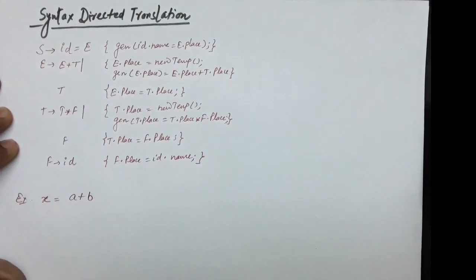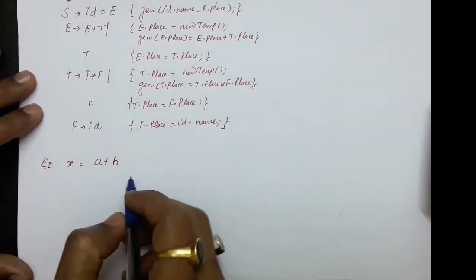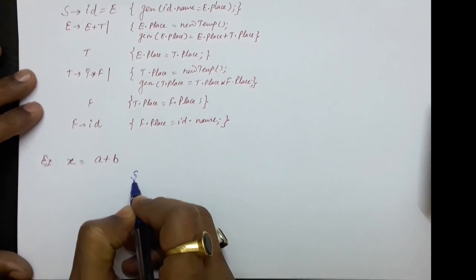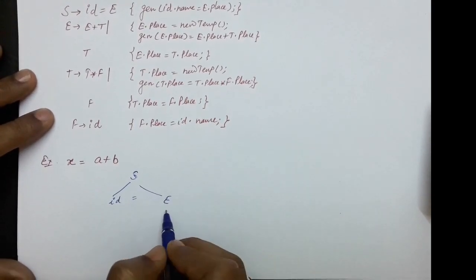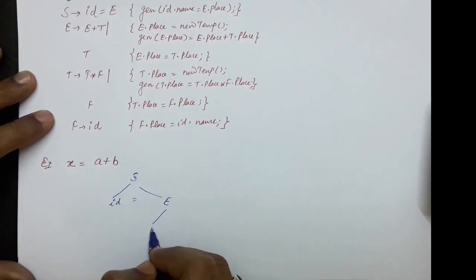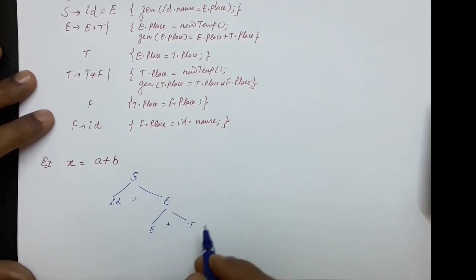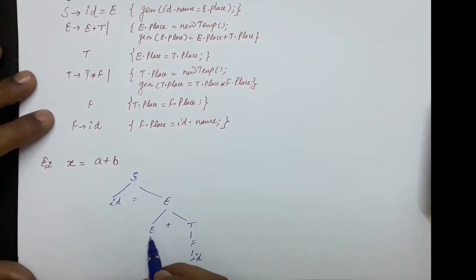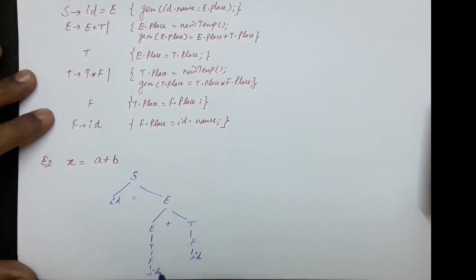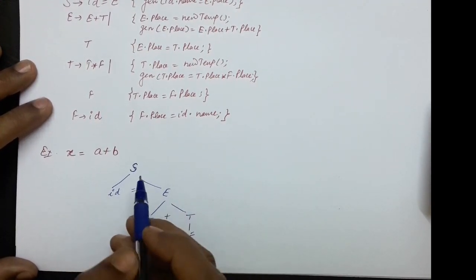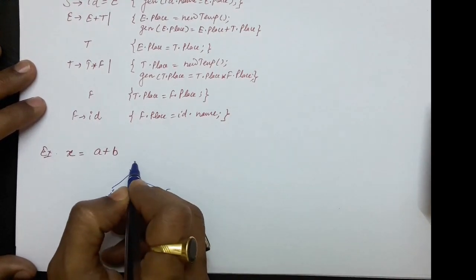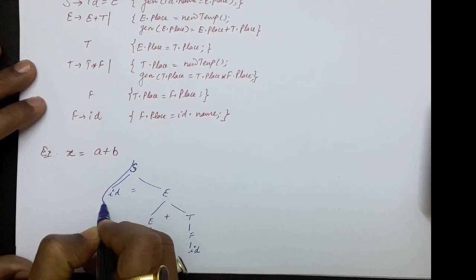Let's take the example of x equals a plus b. For x equals a plus b, let us first draw the parse tree. S produces id equals e, then E expands as E produces E plus T, then T produces F and F produces id. Here too E produces T, T produces F and F produces id. Now let us go by the bottom-up parsing scheme and write the three address code statements at each reduction.